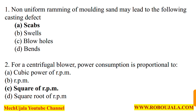The second question asks: for a centrifugal blower, power consumption is proportional to what? This question is related to production engineering. Remember, for a centrifugal blower, power consumption is always proportional to the square of the RPM of the blower. So option number C is the correct option.